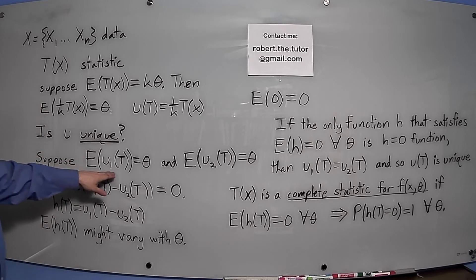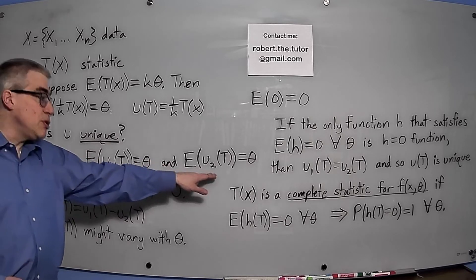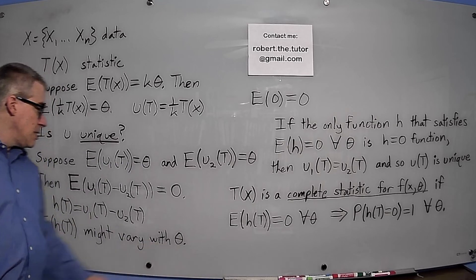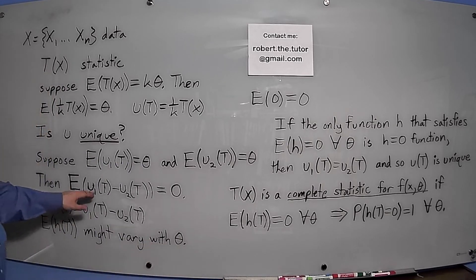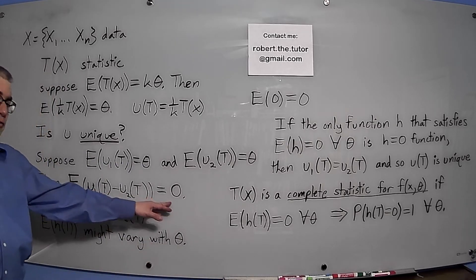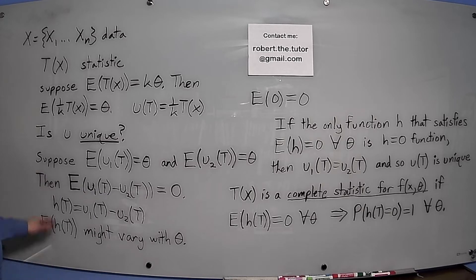Suppose E(u₁(T)) is θ and E(u₂(T)) is also θ. Then E(u₁(T) - u₂(T)) would have to be 0. Let h be that function, u₁(T) - u₂(T).